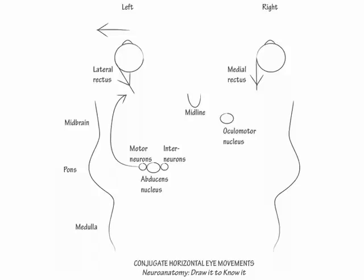To show how the interneurons of the abducens nucleus stimulate the oculomotor nucleus, first draw the right medial longitudinal fasciculus. Show the left abducens interneurons project fibers across midline to join the right medial longitudinal fasciculus.